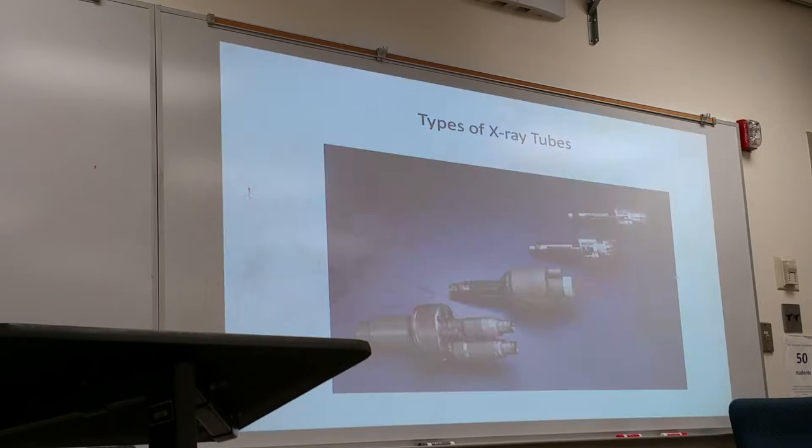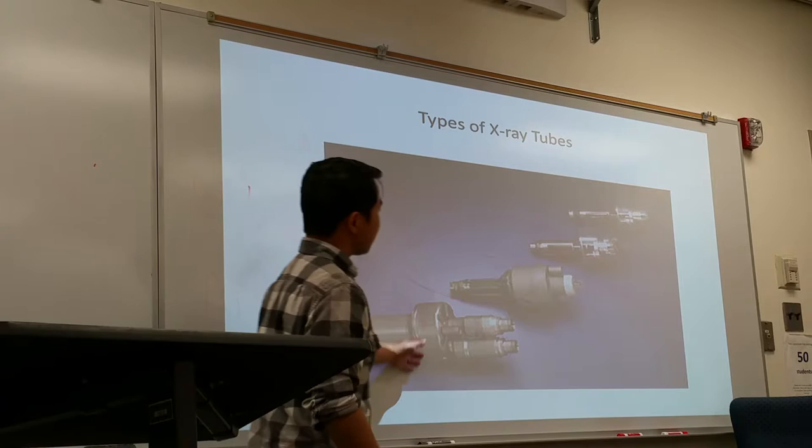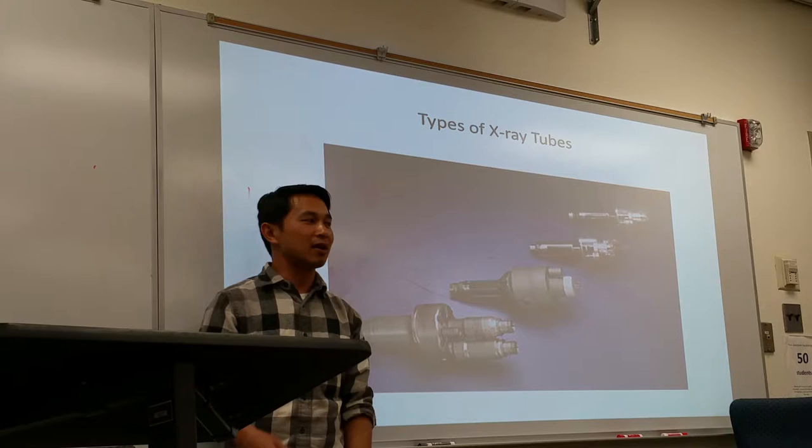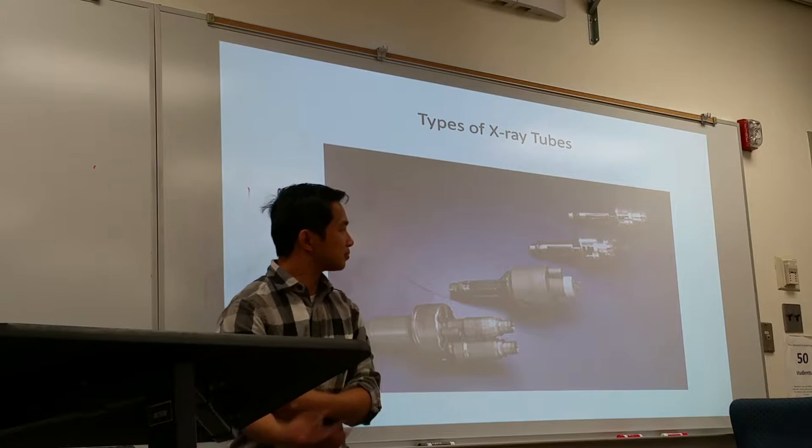The x-ray tube can be encased in either a metal or a pilot glass envelope. This is mostly what you see. However, a lot of tubes are now made in metal. They still call it a glass envelope even though it's no longer glass — it's just called an envelope.